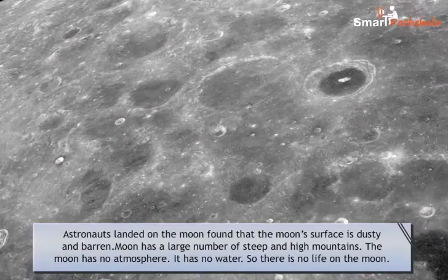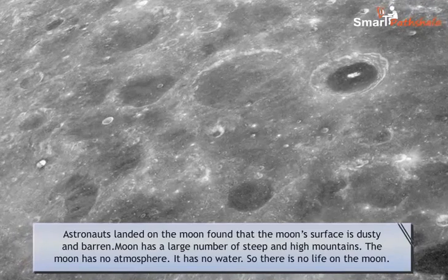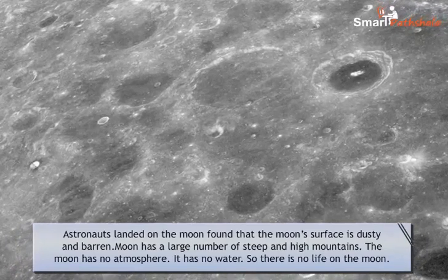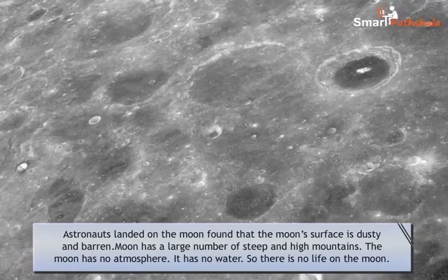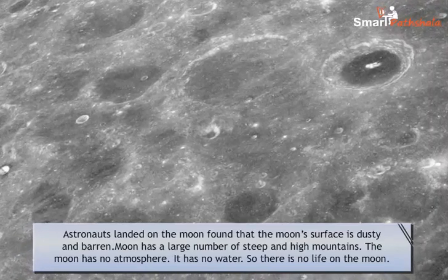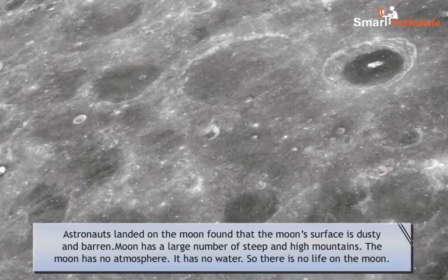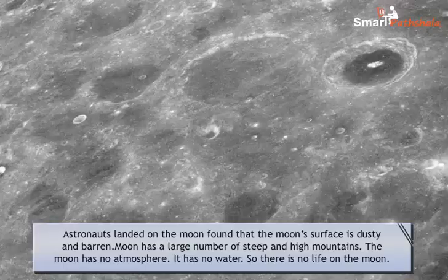Astronauts who landed on the moon found that the moon's surface is dusty and barren. The moon has a large number of steep and high mountains. The moon has no atmosphere, no water, and so there is no life on the moon.